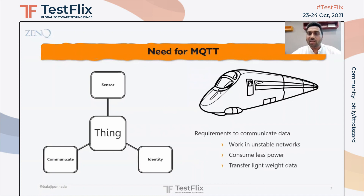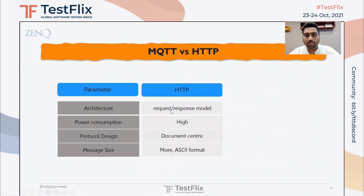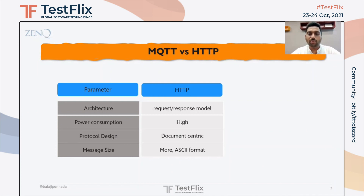The third requirement is that the data transferred is lightweight — it need not transfer pages of documents or images, it's just binary data, geolocation in this case. HTTP protocol will not meet these requirements as it is built on top of a request-response model, which means for data to be transferred between client and server, a handshake process needs to be established, causing high power consumption to establish and keep the connection alive. HTTP is also built for document-centric data transfer, meaning large message sizes. This is why there is a need for a different protocol — and MQTT is one such protocol.